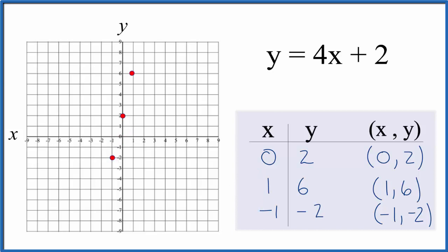So we could just put a line over this, and this is the graph for the equation y equals 4x plus 2. Let's put arrows on the end to show that it goes to infinity, and that's our graph. We could have put other points in, and they would all be on our line here.